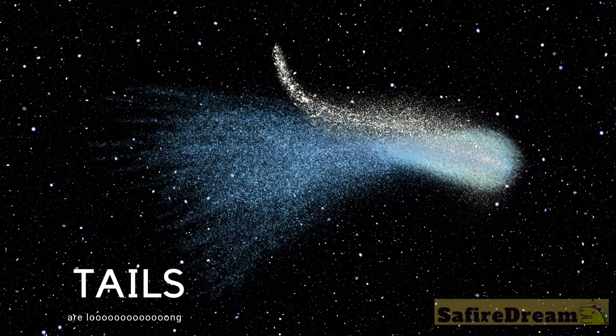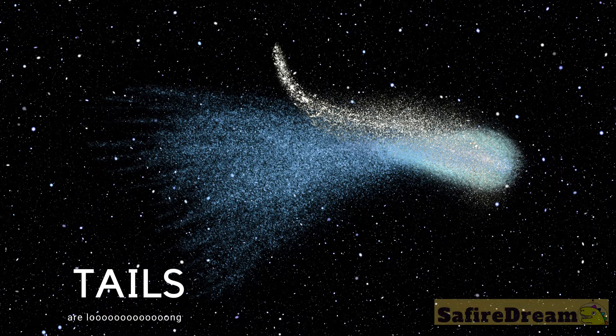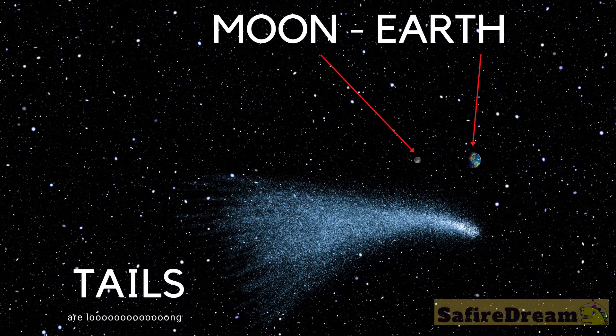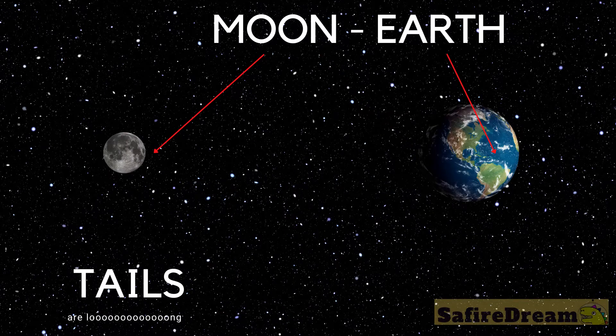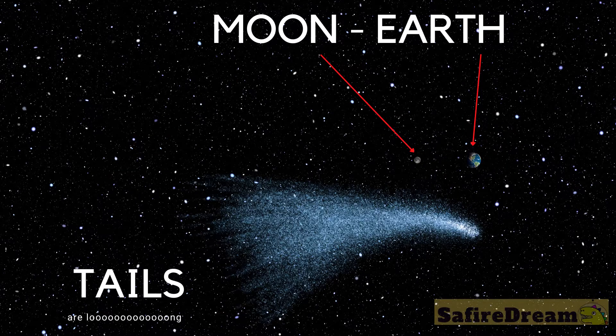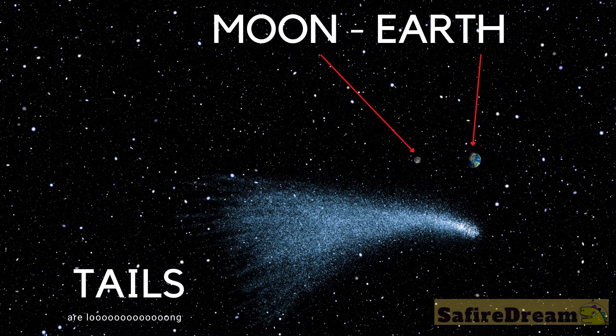A comet can have several different types of tails: dust, plasma, and sodium. The tails themselves are very long. Imagine how far it is from the Earth to the Moon. Well, the comet's tails can be several times longer than this distance.